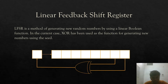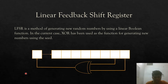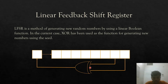The basic working of LFSR is to generate new random numbers using a linear boolean function. The linear boolean function I have used is XOR. XOR is a logic gate which gives an output of 0 when both inputs are the same (11 or 00) and an output of 1 whenever the inputs differ (10 or 01).